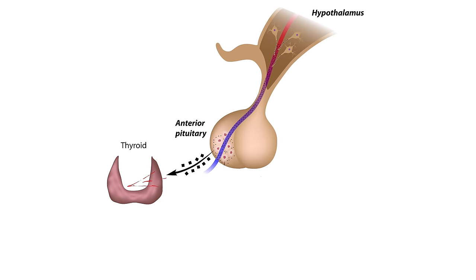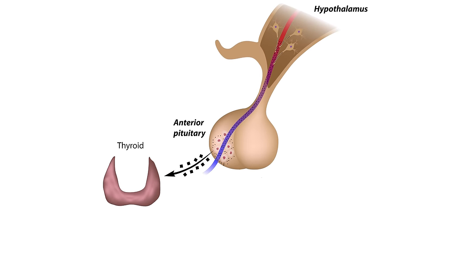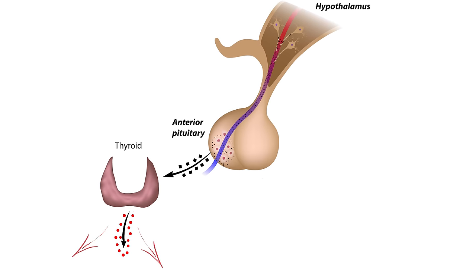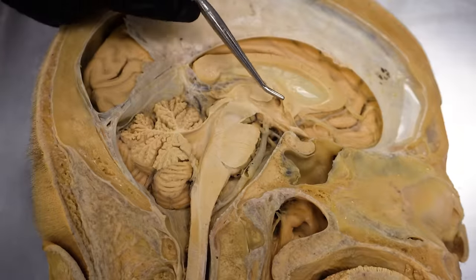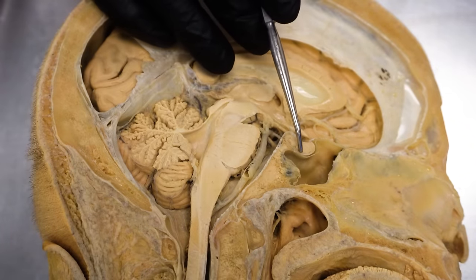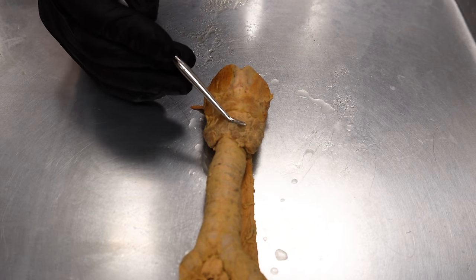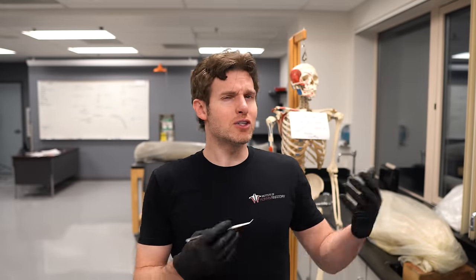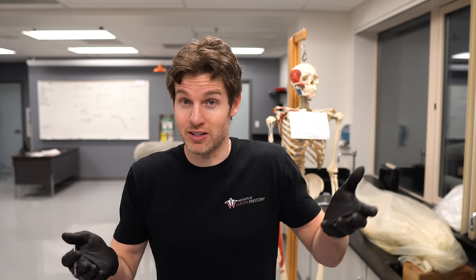The TSH from the pituitary tells the thyroid gland to activate — meaning start secreting and producing the main thyroid hormones. Going back to the furnace analogy: Dad, the hypothalamus, secretes TRH to tell the thermostat, the pituitary gland, to secrete TSH to then tell the furnace, the thyroid gland, to turn on and release its hormones. It's a great analogy because when the thyroid hormones are secreted and metabolism increases, body temperature also increases — just like a furnace.